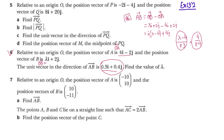Cross-multiplying, we can cancel the decimal points. This gives 4(lambda minus 4) equals 3 times 4, so 4 lambda minus 16 equals 12. Therefore 4 lambda equals 28, giving lambda equals 7. This is our answer for question 6.